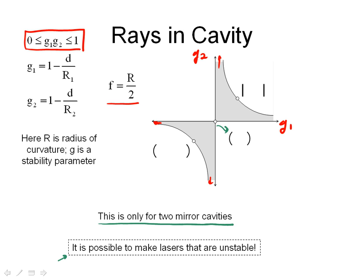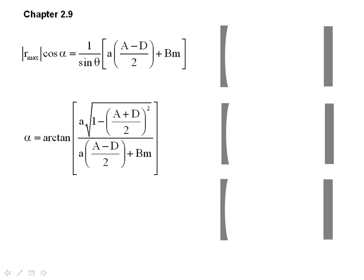The one thing I do want to cover before I finish is that I said the diameter of the mirrors — let's call that phi — is assumed to be infinite in this equation. If I have a mirror with a finite diameter, how do I know if my laser is going to work? That really gets us into section 2.9 of the textbook. Essentially, what you're given is a method using the ABCD matrix for a cavity to calculate the maximum extent of the laser beam.